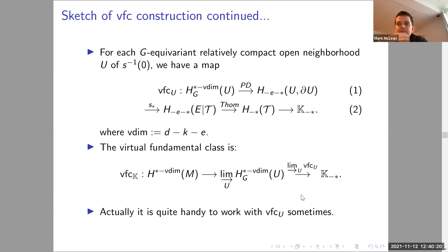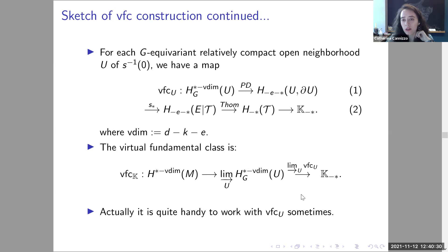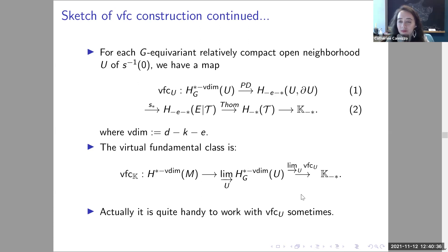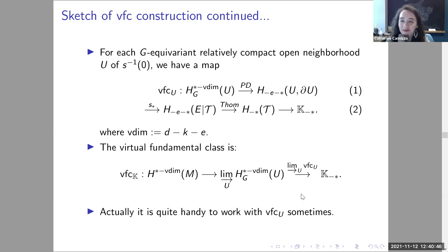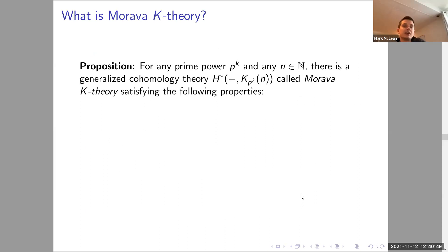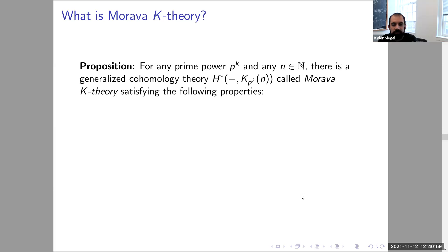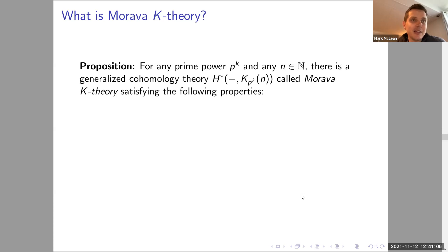Audience question: Can you say what T and E are for the moduli spaces in your setting? Yes — briefly, T is some other moduli space and E is a natural vector bundle over it.